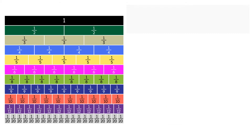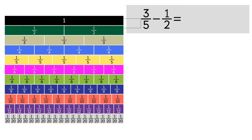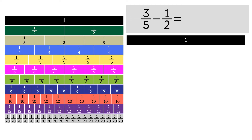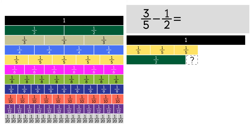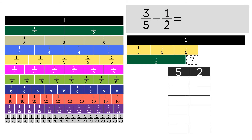Let's do another example: 3 fifths minus 1 half. We'll use 1 as the benchmark. Under the 1, we'll put 3 strips of 1 fifth to make 3 fifths. Underneath that, we'll put 1 strip of 1 half. The empty space is our difference. To find the like denominator, we need to find the common multiple.